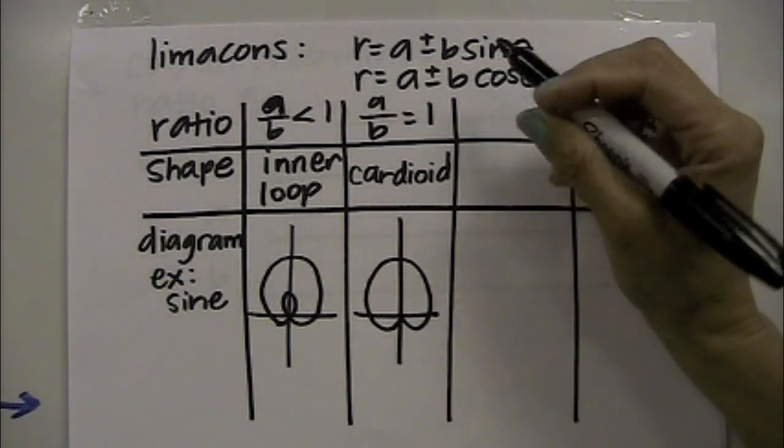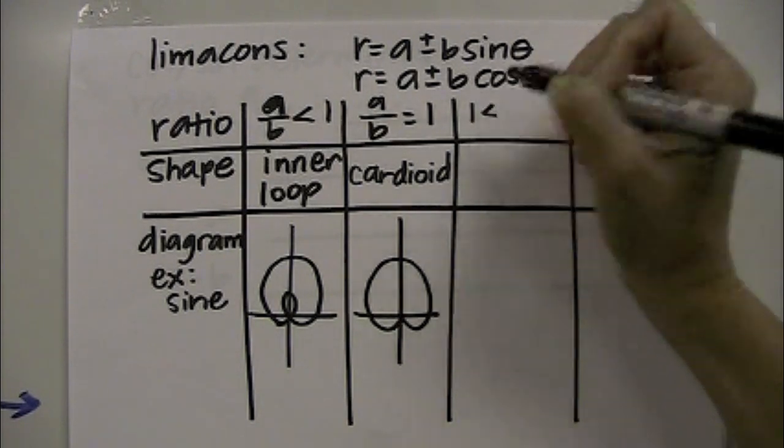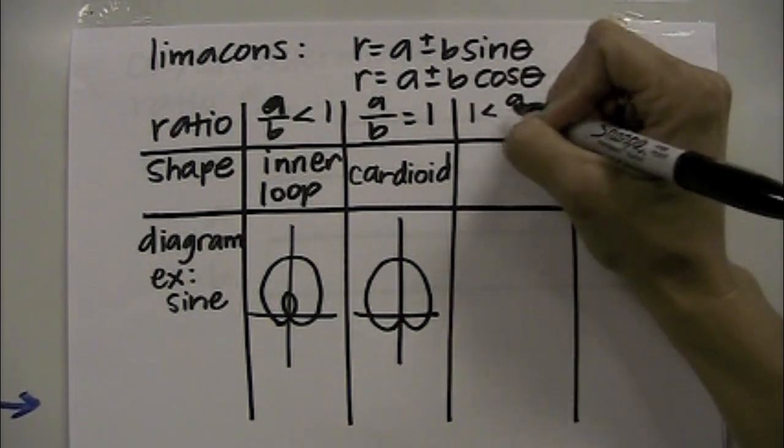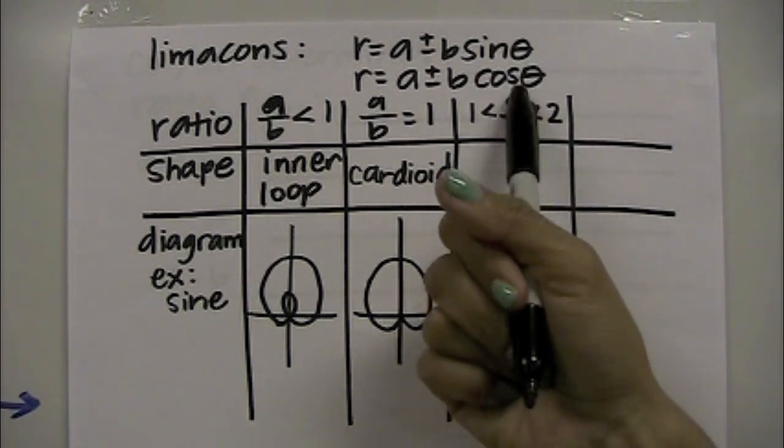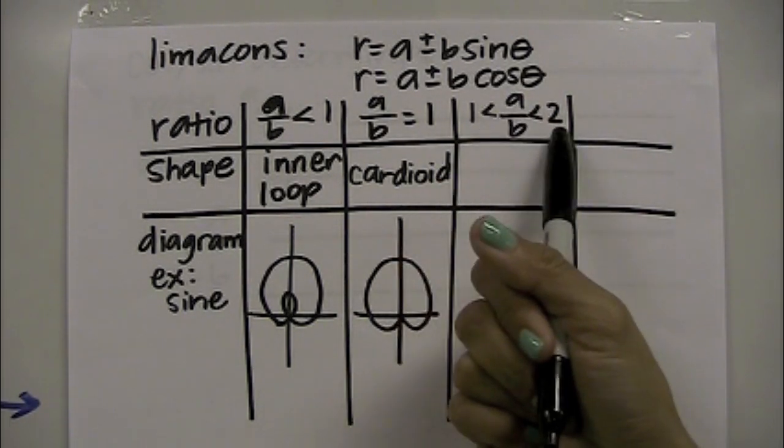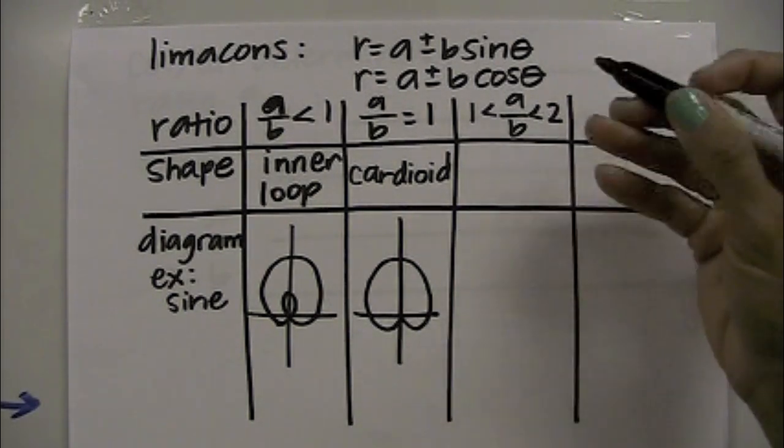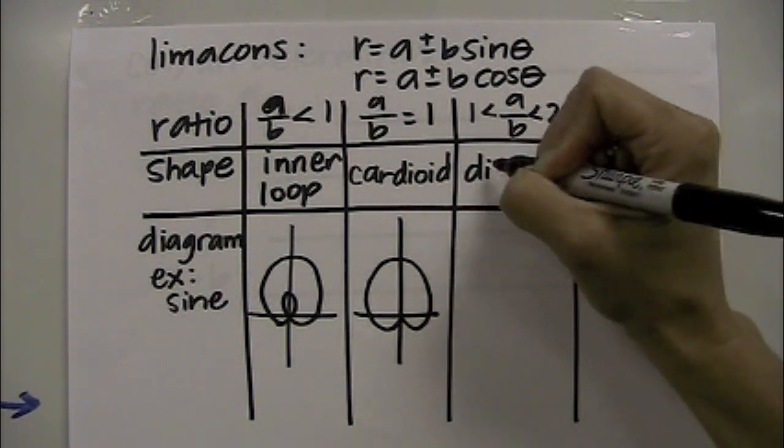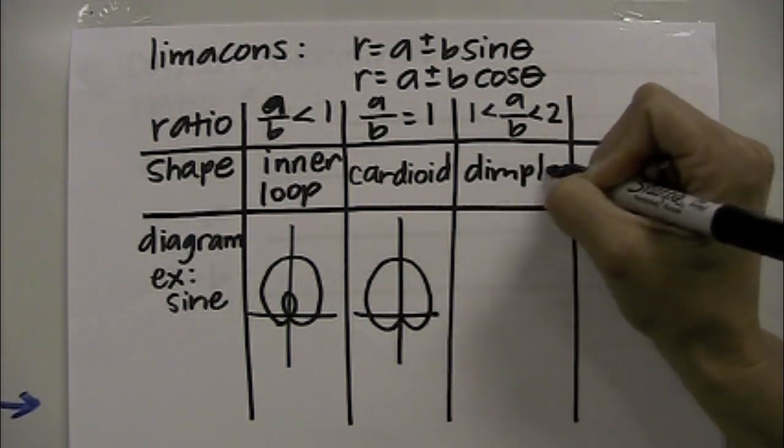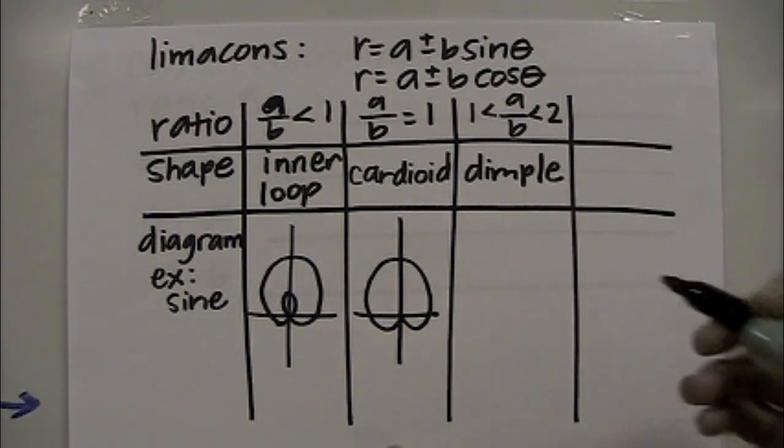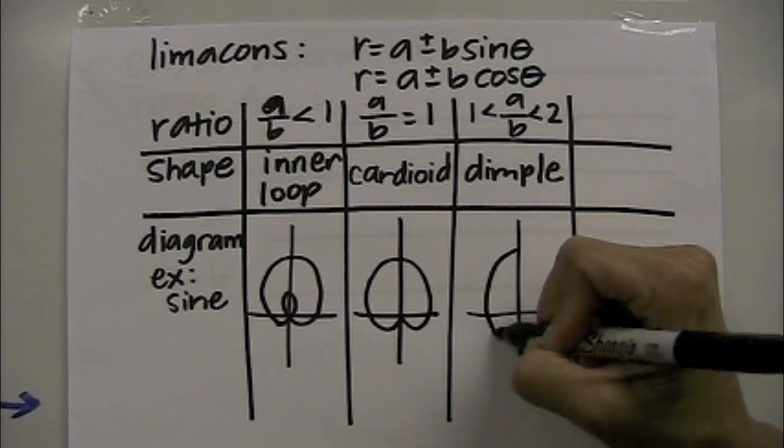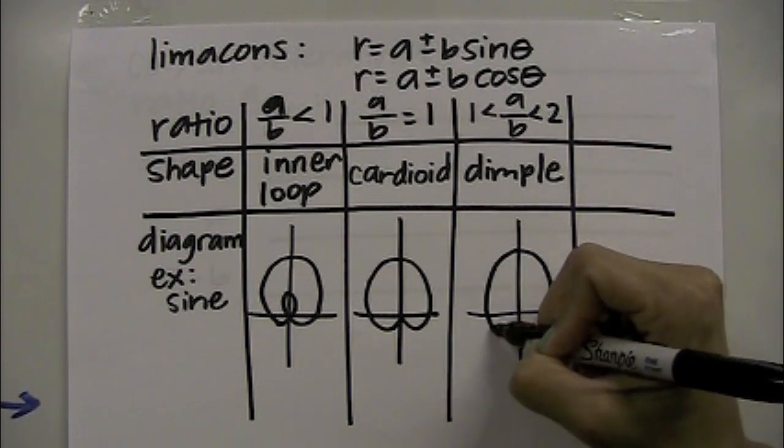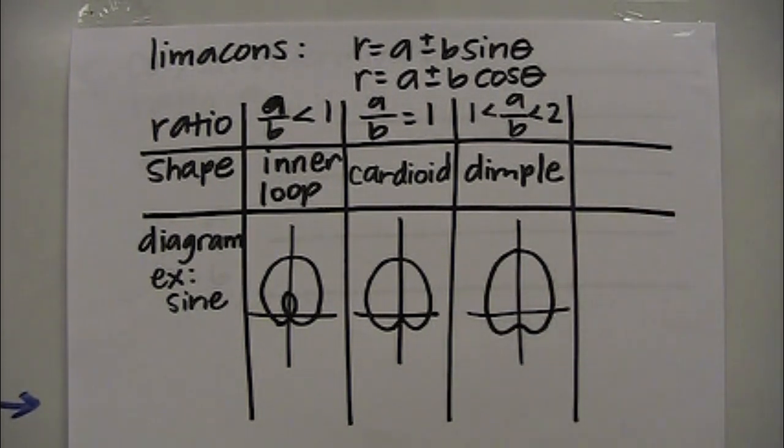Next is when your a over b is between 1 and 2, not inclusive. So that's your next scenario for your ratio when the ratio a over b is between 1 or 2. We would call it dimpled. So if I were to draw this, it kind of goes in a little and then comes back out. So it's not a point like the cardioid, but it's not flat there.